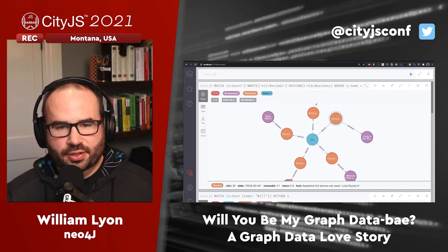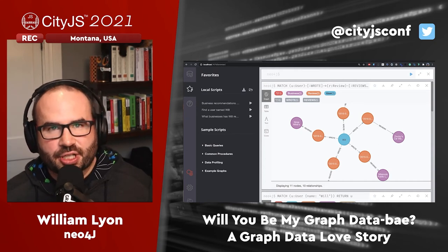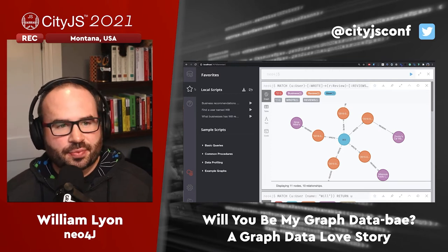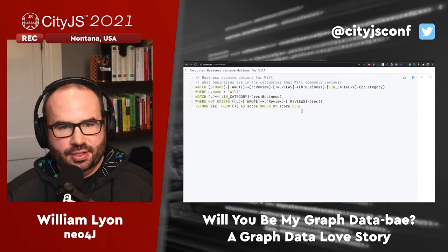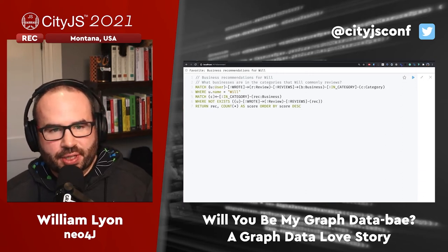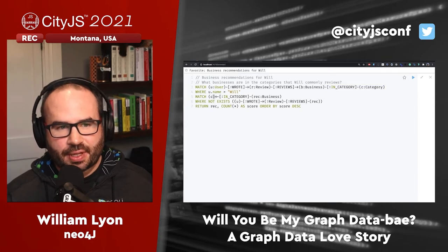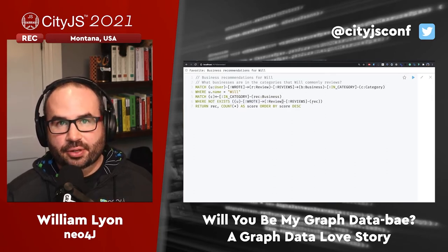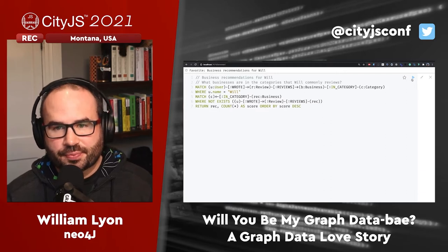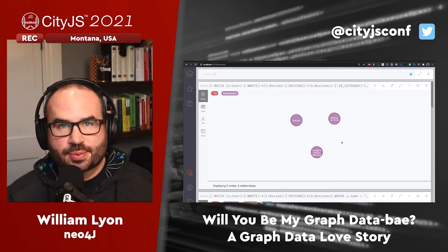For more complex business logic - like generating personalized results - based on businesses this user has reviewed, can we recommend businesses they might be interested in? To do that we find all businesses this user has reviewed, find what categories those businesses are in, then find other businesses in those same categories that this user has not written a review of. Those might be good results - this is traversing the graph to find businesses this user might be interested in based on their previous preferences, expressed in Cypher.